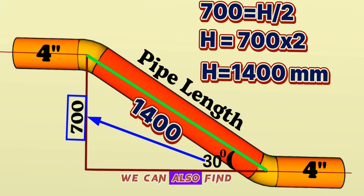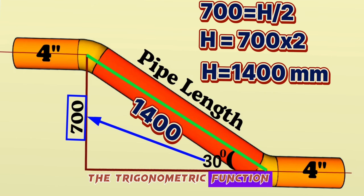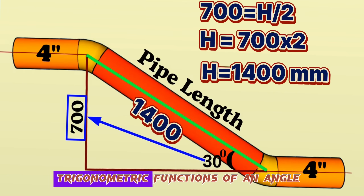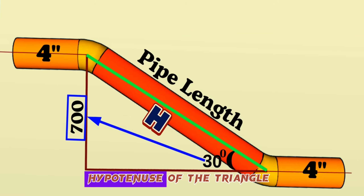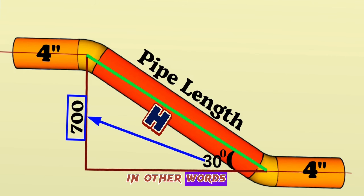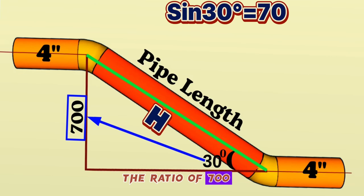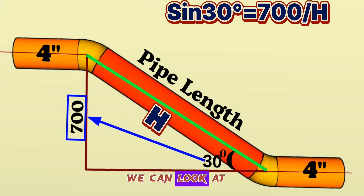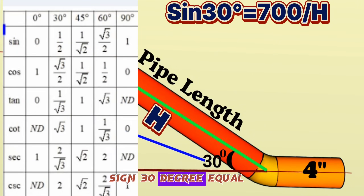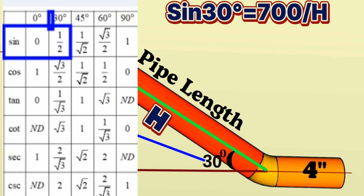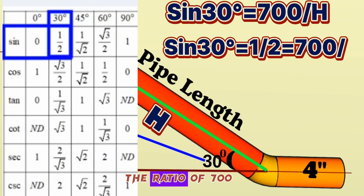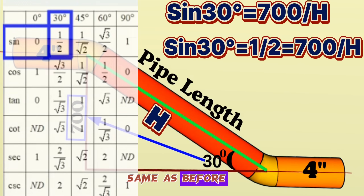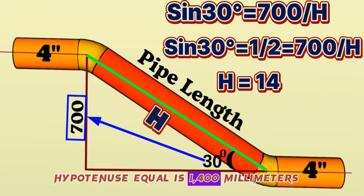We can also find the hypotenuse using the sine trigonometric function. Sine is the ratio of the opposite side to the hypotenuse, so sine 30° equals 700 divided by H. Looking at the trigonometric function chart, sine 30° equals 0.5 (or 1/2). Therefore, 1/2 equals 700 divided by H, giving us H equals 1400 millimeters — the same result as before.